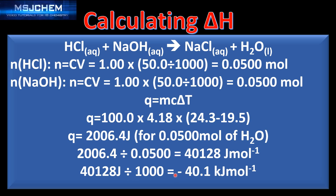Finally, we divide by 1000 to get our answer in kilojoules, and we put a negative sign in front because the reaction is exothermic. Giving our answer to three significant figures, the final answer is negative 40.1 kilojoules per mole.